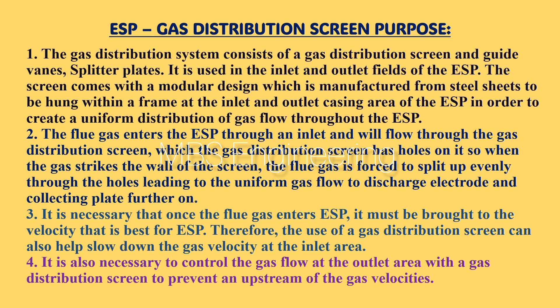The purpose of the gas distribution screen in the ESP: Point 1: the gas distribution system consists of a gas distribution screen, guide vanes, and splitter plates. It is used in the inlet and outlet fields of the ESP. The screen comes with a modular design manufactured from steel sheets, hung within a frame at the inlet and outlet casing area of the ESP.